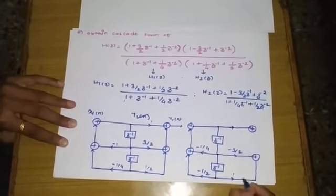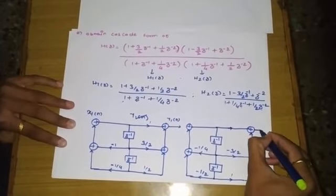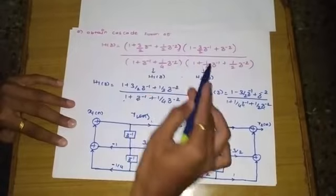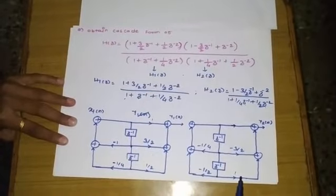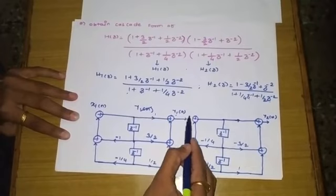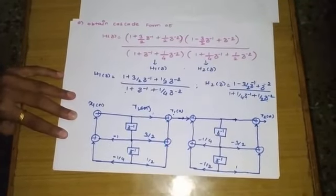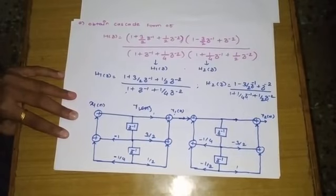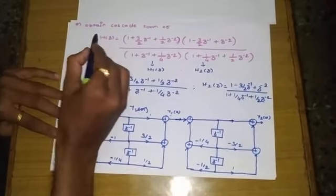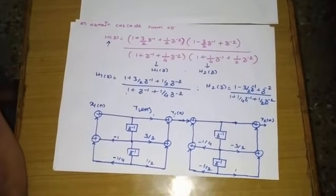We cascade the two systems by connecting them in series: the output of the first system Y1(N) becomes the input to the second system. This gives us the complete cascade form realization of the given transfer function H(Z) as an IIR system.